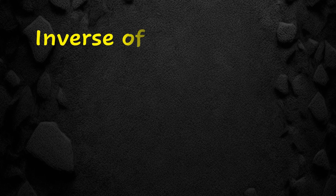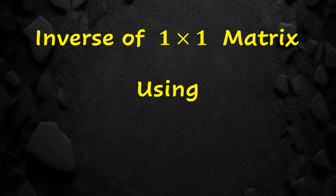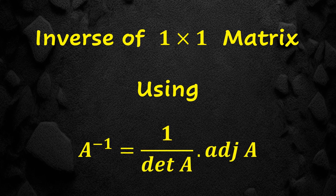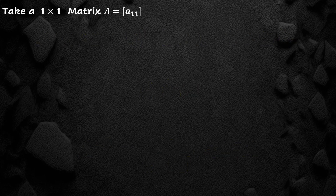In this video, we shall find the inverse of a 1×1 matrix using the formula: A inverse is equal to 1 over determinant of A, into adjoint of A. We take a 1×1 matrix A equal to A11 and find its inverse using this formula.